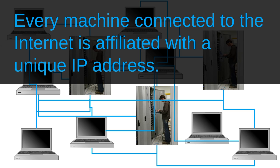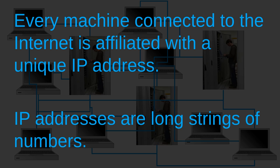As we learned in previous lessons, every machine connected to the Internet is affiliated with a unique IP address. When machines send information and information requests to each other, they send them to these IP addresses. And as we've seen in previous lessons, IP addresses are long strings of numbers. Computers have no trouble working with long, apparently random strings of numbers.